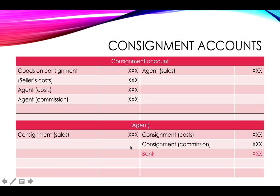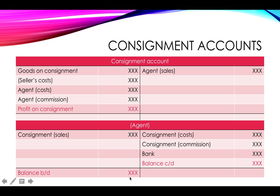You would then also show in the agent account any amount that they pay you, which would probably offset their account — and usually there would then be nothing left over and you would have a zero balance. However, this is not always the case. It is possible that the agent still owes you money if they've only paid in part, or maybe if they've overpaid, you might have a balance on the other side. So it's not usual for an agent account to have a balance at the end of the month, but it is very possible.